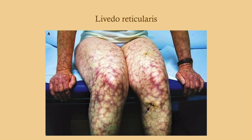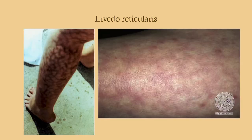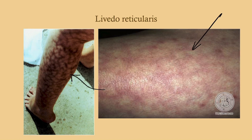Livedo reticularis — once you see it, you'll always recognize it. You can see it on the arms, legs, and so forth. A less obvious case can still show that mottling pattern; if you've got a patient with renal failure and you see this, you need to think of an atheroembolic process.